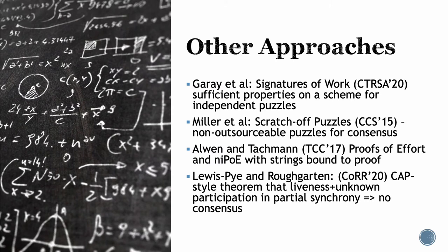A number of other attempts have been made to find the minimal properties of puzzles that imply consensus. Gray et al. gave signatures of work, which include the property that finding one puzzle solution doesn't help with finding another, and they showed their formalization implies consensus. Mueller et al. presented non-outsourceable scratch-off puzzles that they showed also imply consensus. Allen and Tauchman formalized proofs of effort based on moderately hard functions and provided a framework for reasoning about computational resources which allow binding strings to proofs of effort. Lewis, Pi, and Roughgarden proved a CAP-style theorem that in order to have liveness for a permissionless protocol in a partially synchronous network you must also know the participation — similar to a theorem by Poisson-Chi that said if the network delay is unknown, the participation must be known within a factor of two.